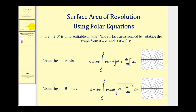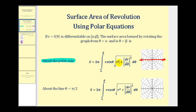If r equals f of theta is differentiable on the closed interval, the surface area formed by rotating the graph about the polar axis is equal to two pi times the definite integral from alpha to beta of r sine theta times the square root of r squared plus (dr/dθ)² dθ. Remember the polar axis is this axis here — it's like rotating about the x-axis. This is very similar to the formula for parametric equations, where we had y instead of r sine theta, and the arc length formula for parametric equations instead of the polar version.